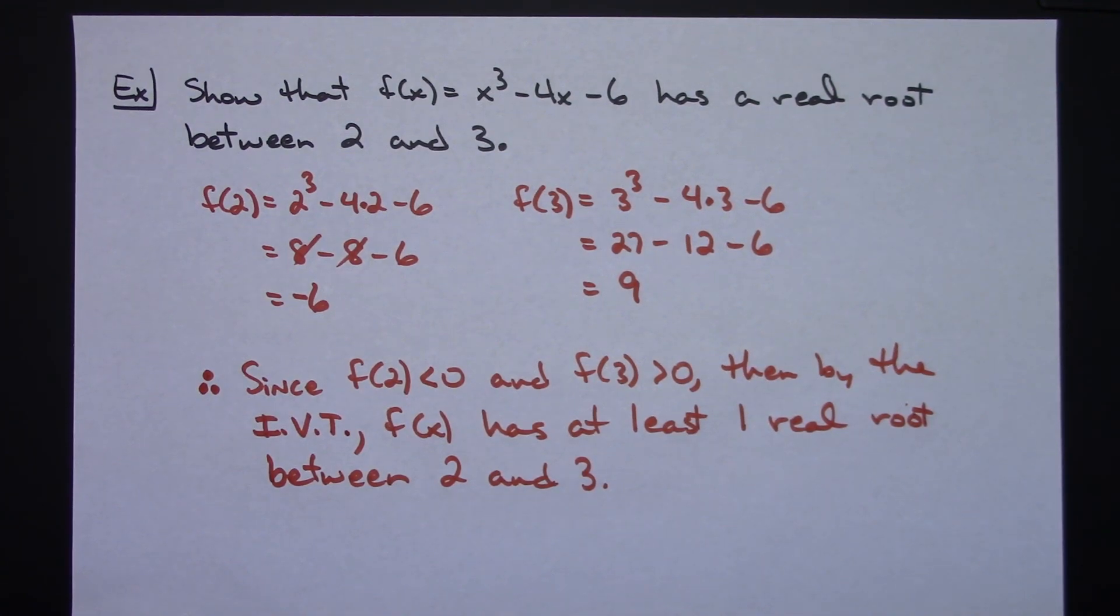And really all that intermediate value theorem does is just let us identify whether or not there's a root in there. It really doesn't give us a way to find that. You could use other methods to find that root if you wanted to, but we're really just trying to verify whether or not one exists.